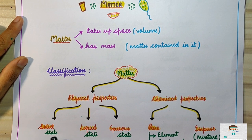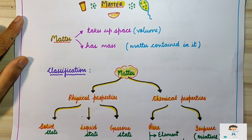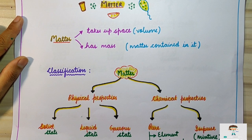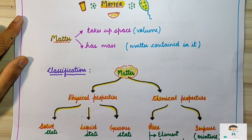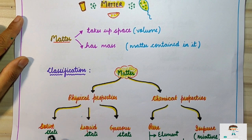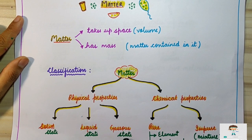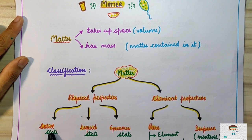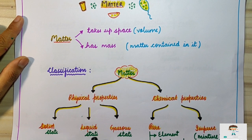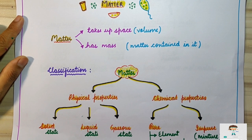Other than these three states, we have two more states of matter. The fourth state is known as plasma state, and the fifth is a man-made state known as BEC — Bose-Einstein Condensate. But in your syllabus you only have the three states: solid, liquid, and gaseous state.